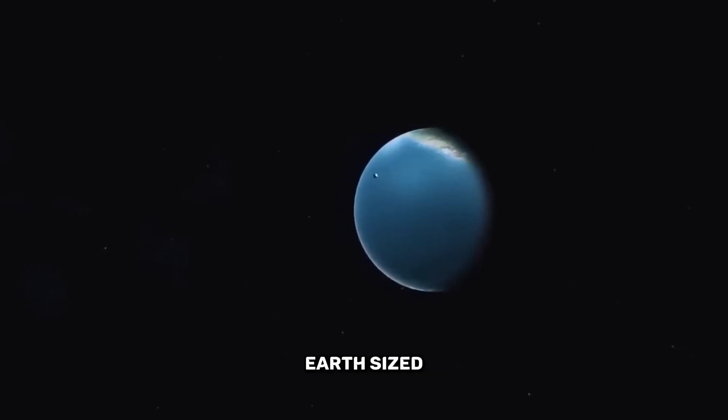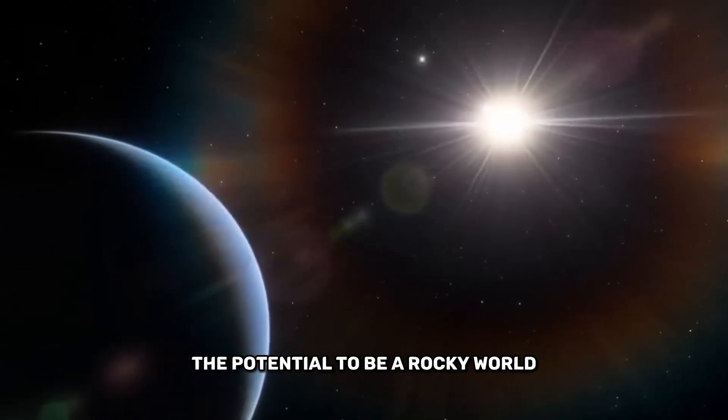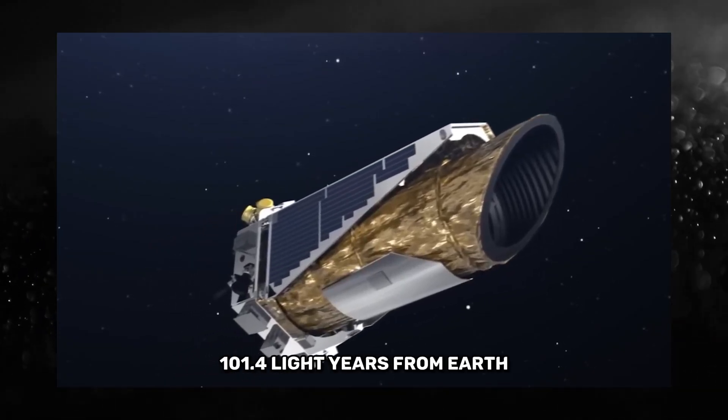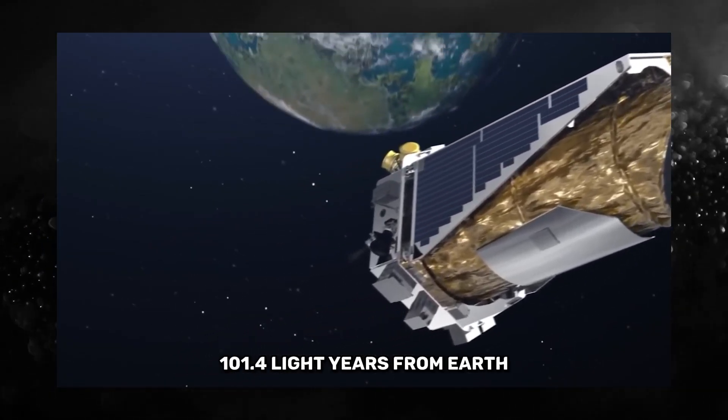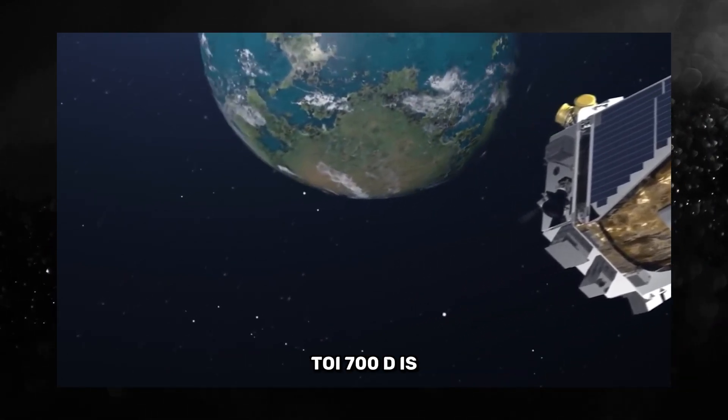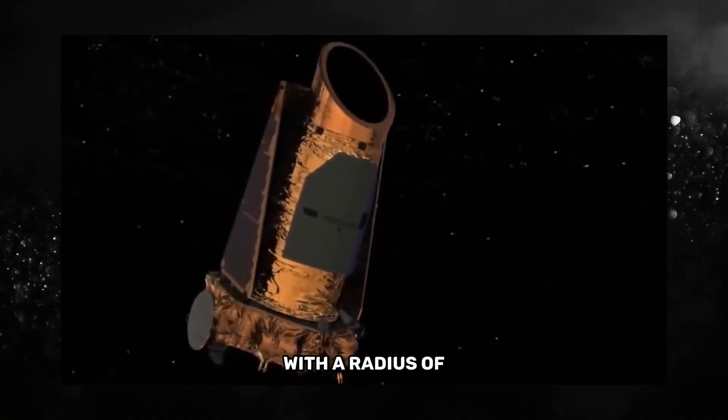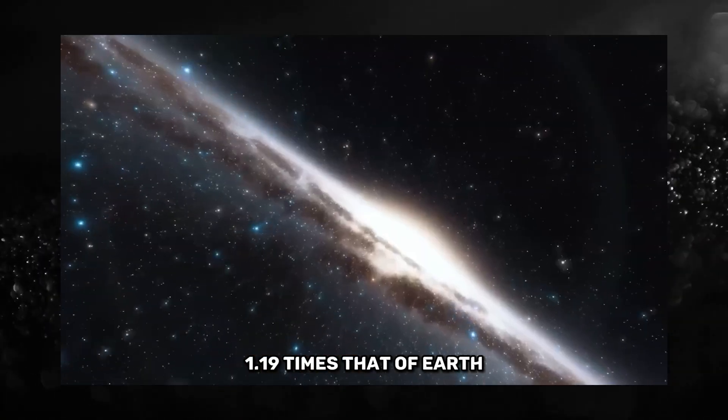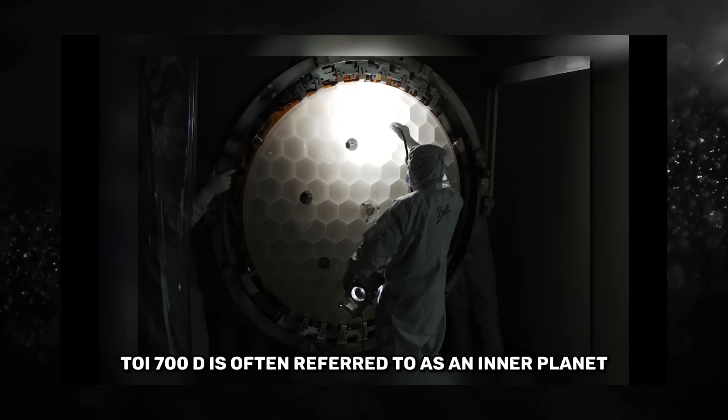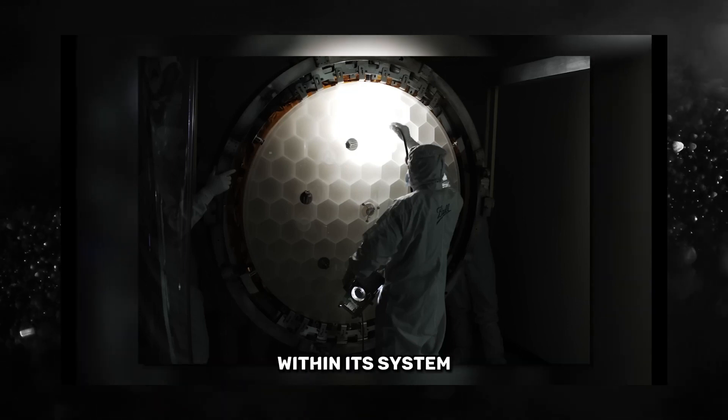Located approximately 101.4 light-years from Earth in the constellation of Dorado, TOI-700d is the outermost planet within the system. With a radius of 1.19 times that of Earth, TOI-700d is often referred to as an inner planet within its system.